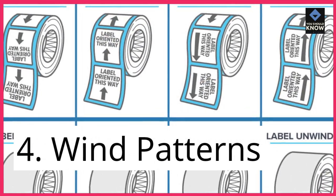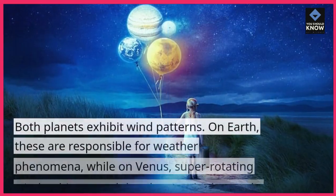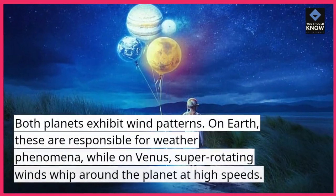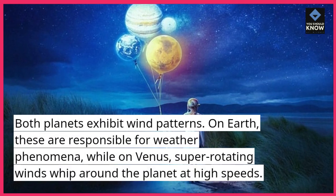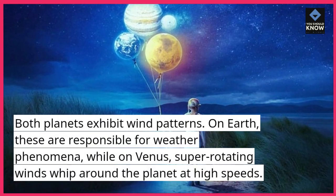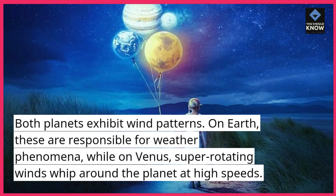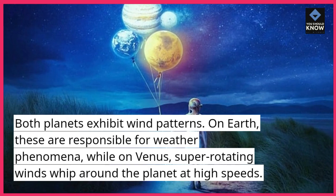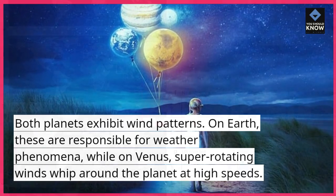4. Wind Patterns: Both planets exhibit wind patterns. On Earth, these are responsible for weather phenomena, while on Venus, super-rotating winds whip around the planet at high speeds.